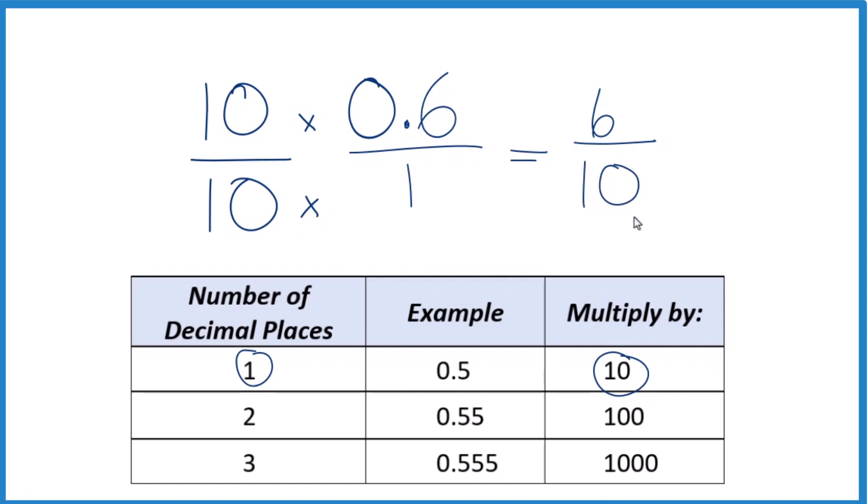So the decimal 0.6 or 0.60, that equals the fraction 6 tenths. But we can reduce this down to lowest terms. Because these are both even, let's divide them both by 2. 6 divided by 2 is 3. 10 divided by 2 is 5. And we end up with 3 fifths.